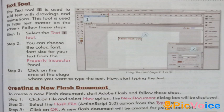Creating a new Flash document: To create a new Flash document, start Adobe Flash and follow these steps. Step 1, click on File and select New option — the New Document dialog box will be displayed. Step 2, select the Flash file for ActionScript 3.0 option from the type list. Step 3, click on OK — a new Flash document will be created for you to start with.